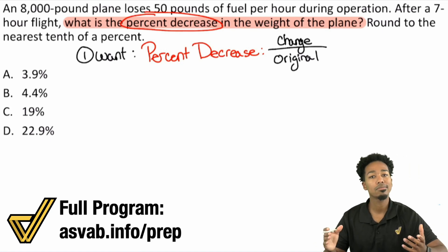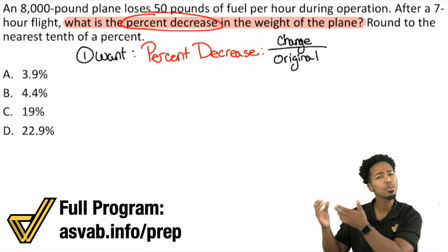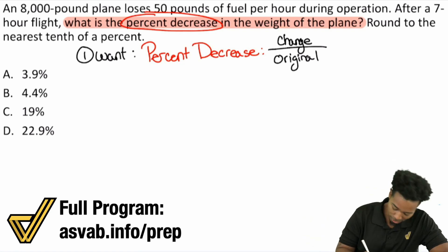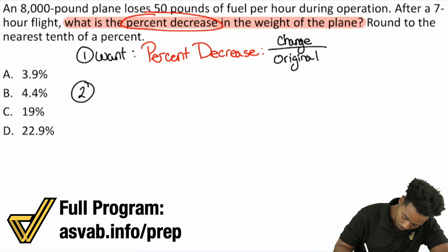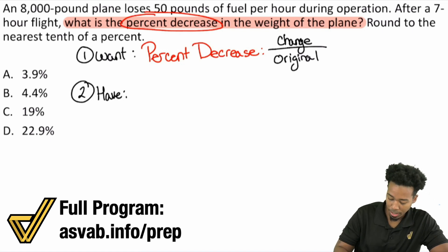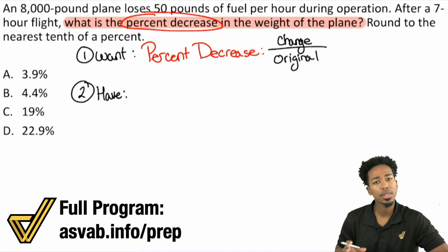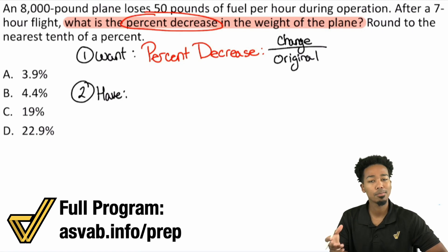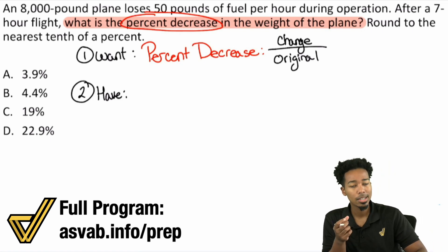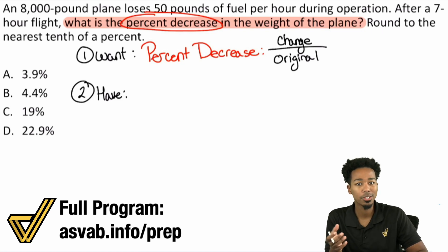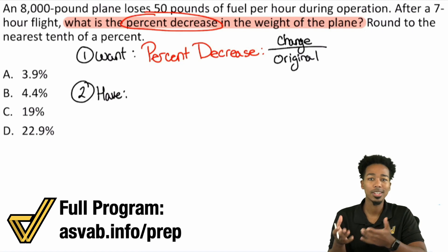Step two: what do we have? I'm going to highlight anything that is numerical or a quantity, a number. But remember, every time you go through a word problem, it's not just about highlighting the number — it's also about highlighting what it means. Because the numbers don't matter until you know what you're supposed to do with them, and you don't know that until you know what they mean.